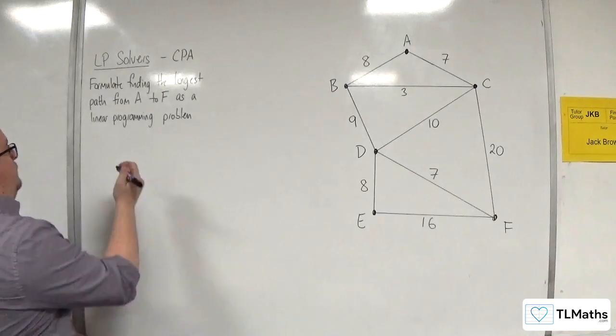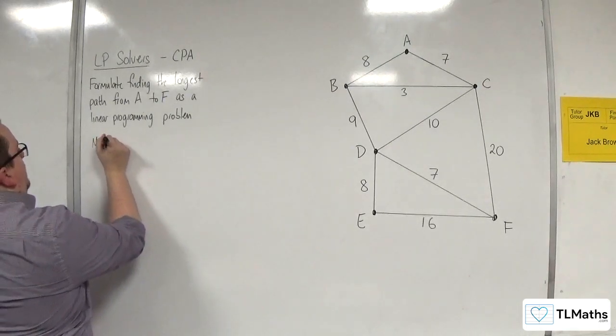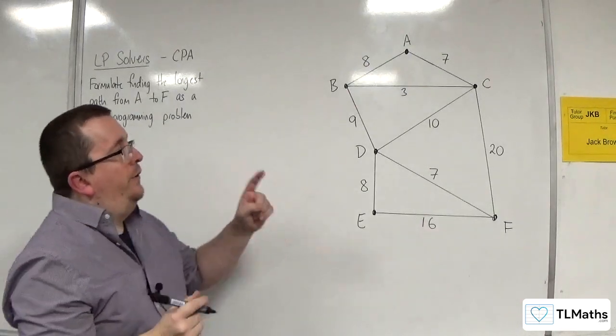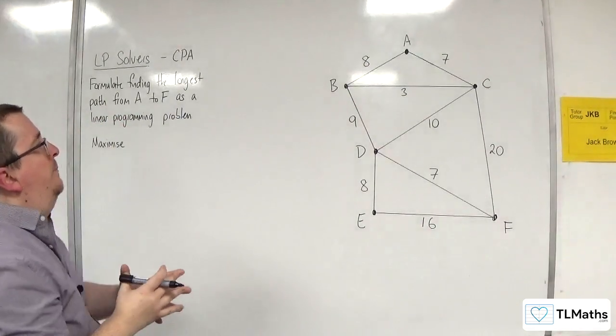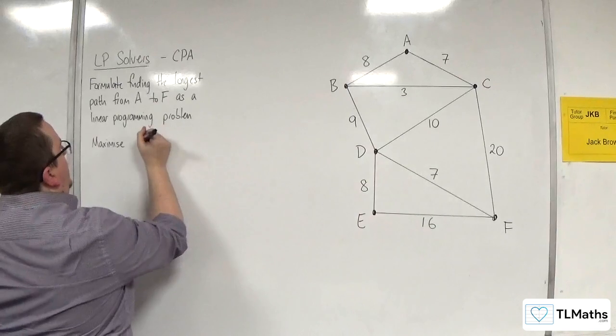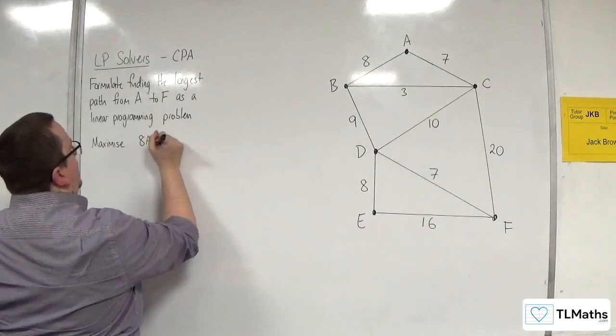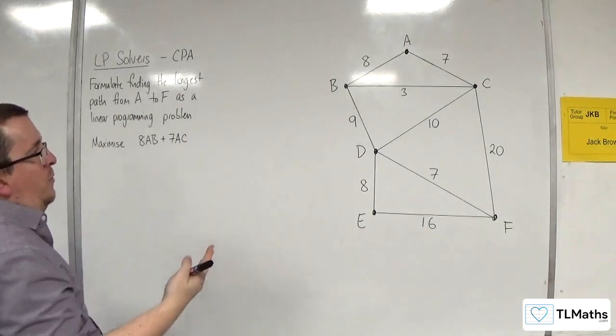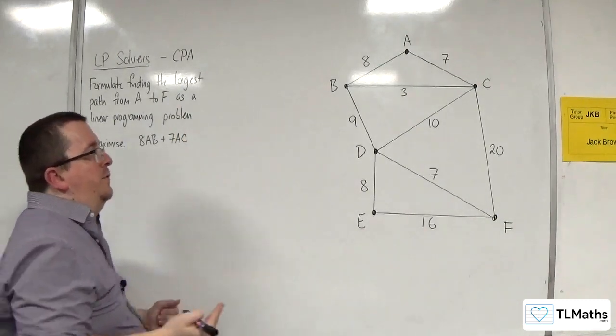So first of all, we want to maximize. So we've got the weights times by their indicator variables, so 8 lots of AB and then 7 lots of AC. We're not having BA or CA because they're going back to the starting vertex.